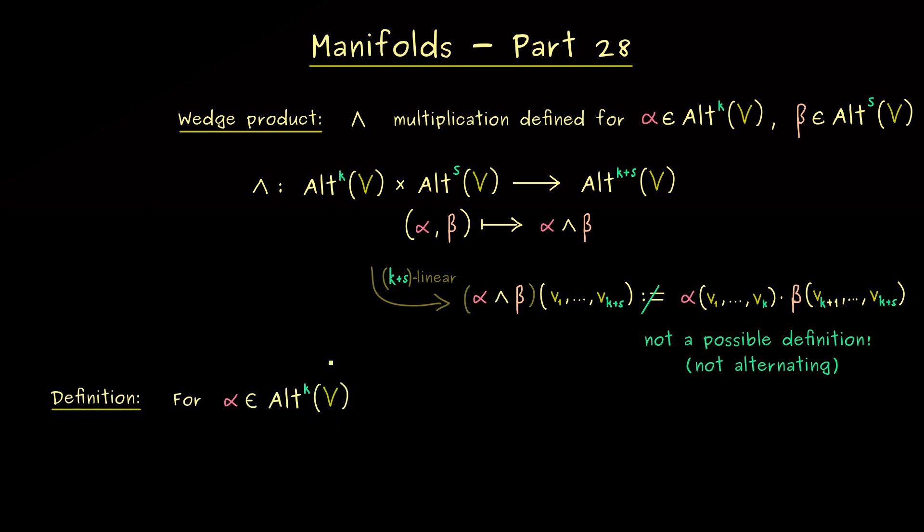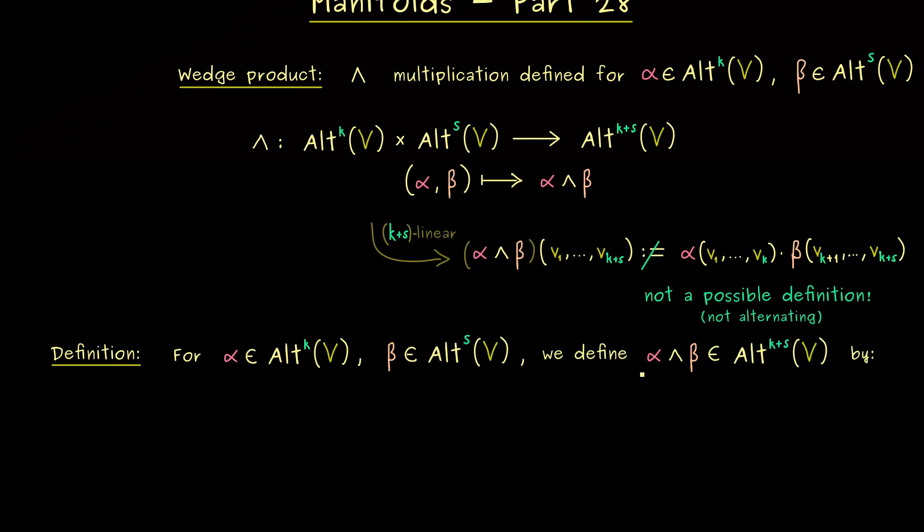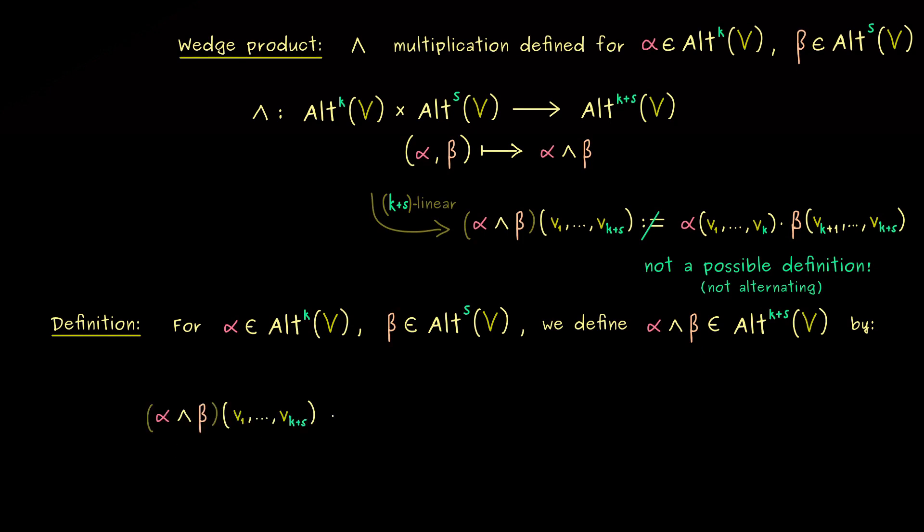Okay, then I would say let's write this down for an alternating k-form alpha and for an alternating s-form beta. And then, as before, we will define the new form alpha wedge beta. Moreover, we already know we have to put in k+s vectors, and then we have to combine alpha and beta with permutations of these vectors. Therefore, I would say let's start with that and let's call the permutation sigma. Therefore, the first input here is v with index sigma of 1, and this continues until we have v_{sigma(k)}.